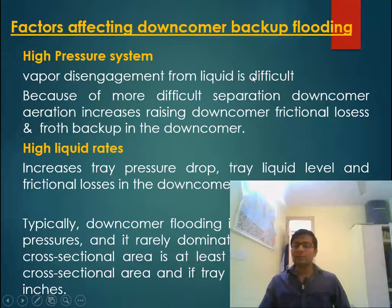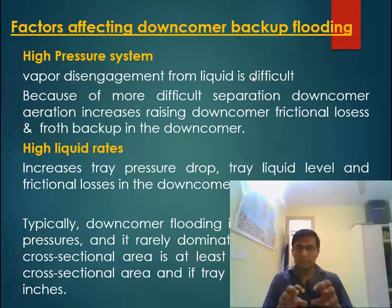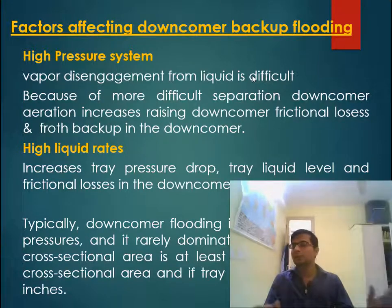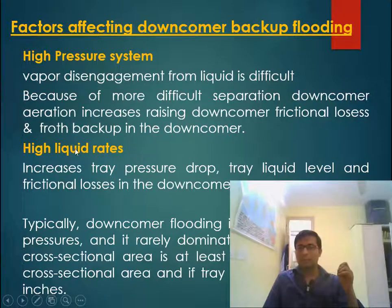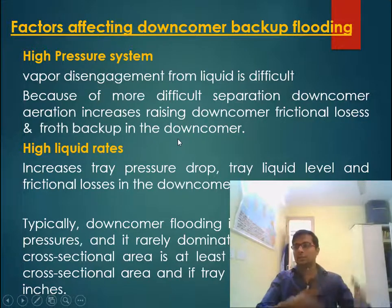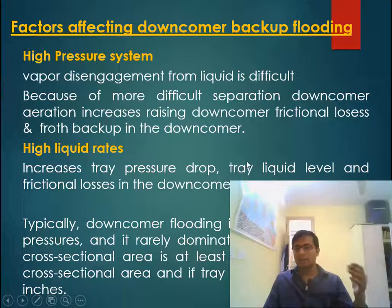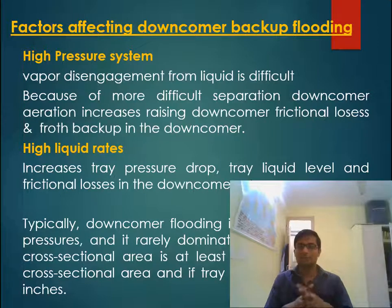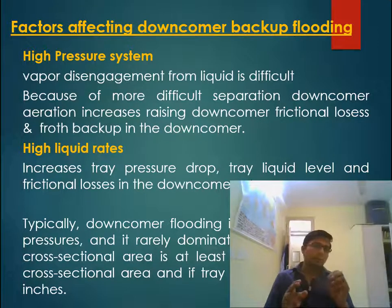There is another reason: vapor bubbles inside the downcomer create frictional losses because bubbles restrict liquid flow. Due to both high aeration and frictional losses, the liquid level inside the downcomer goes high and downcomer backup flooding occurs. Similarly, when liquid flow rate increases, it raises tray pressure drop due to the high liquid level on the tray, increases exit losses, and all these effects push the downcomer liquid level higher, causing backup flooding.